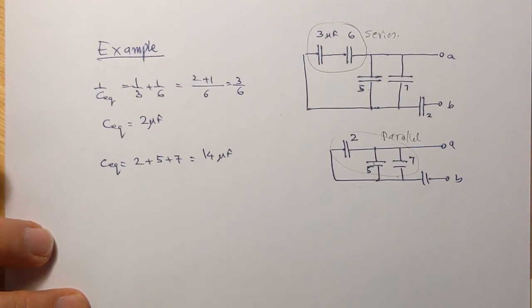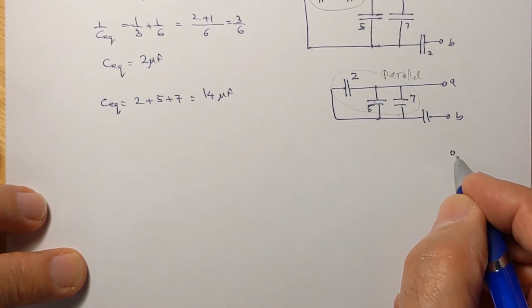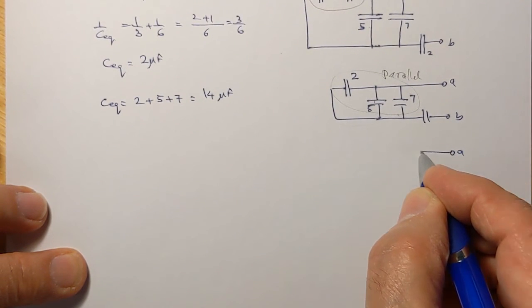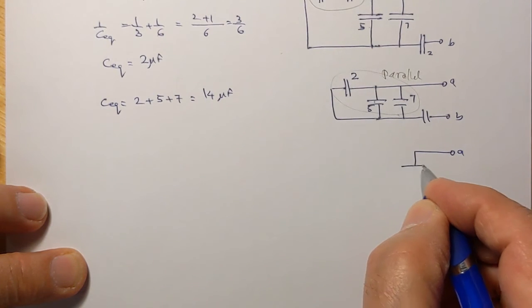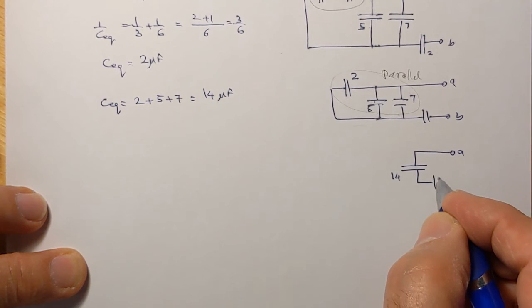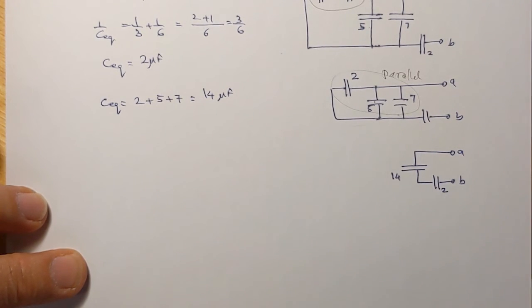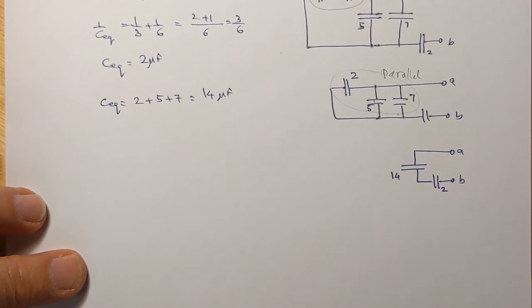So we can now replace this with another figure. That's the point A. All of these we can replace with one capacitor of 14 microfarads and this one of 2. Now here, one side is connected to the other and the current would go through. And so these two are in series.